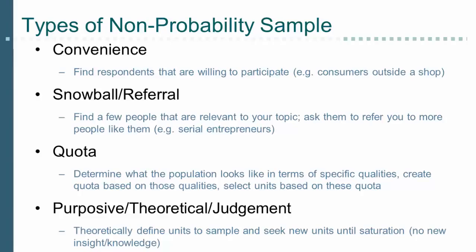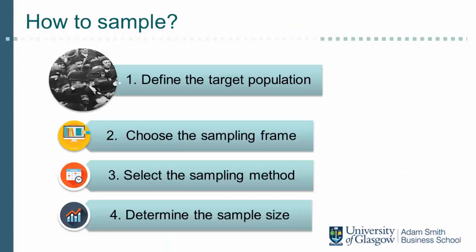Elements can also consist of people judged to be experts — for example, when research concerns opinions on matters requiring special knowledge. A special case of purposive sampling is theoretical sampling, where you theoretically define units to be sampled and then sample them progressively until you find you have not obtained any new insights or the units do not generate knowledge that contradicts your previous findings. Such theoretical sampling is found in qualitative research.